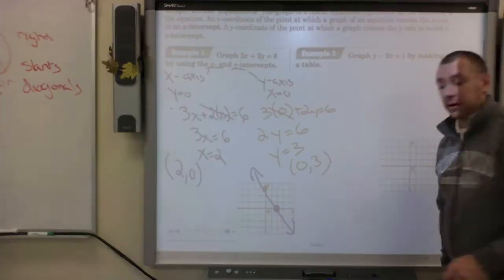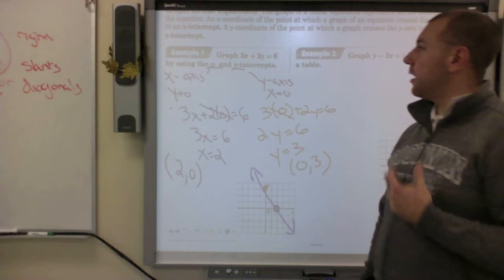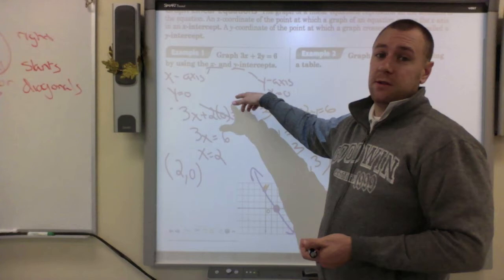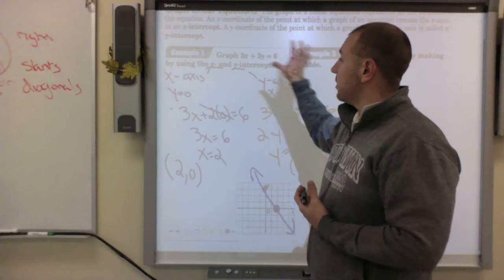Now I draw a line through those two intercept points. We're accustomed to y equals mx plus b for other equations, but here we have to work from standard form. This is the basic method of graphing using x and y intercepts.